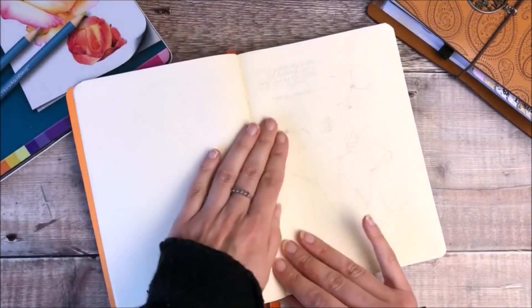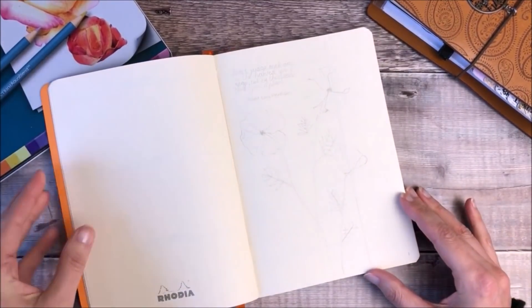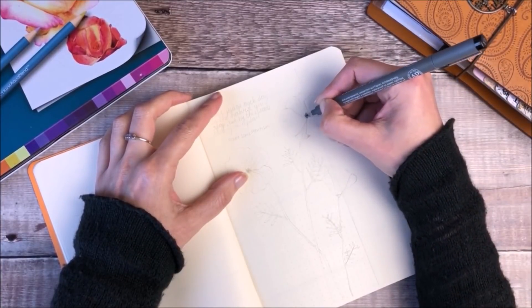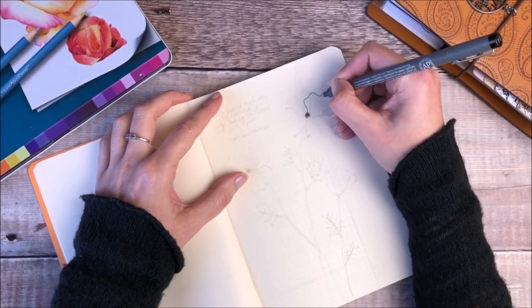The first thing I'm going to start off with is creating my cover page for the new month, and I'm using a Staedtler pigment liner with a 0.1 nib.